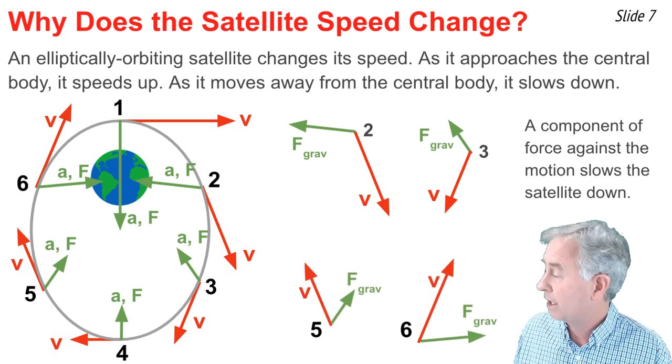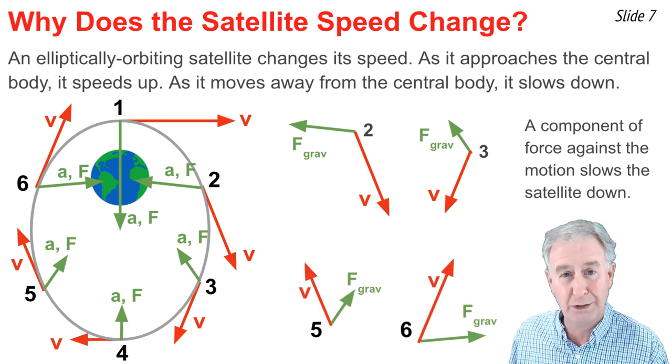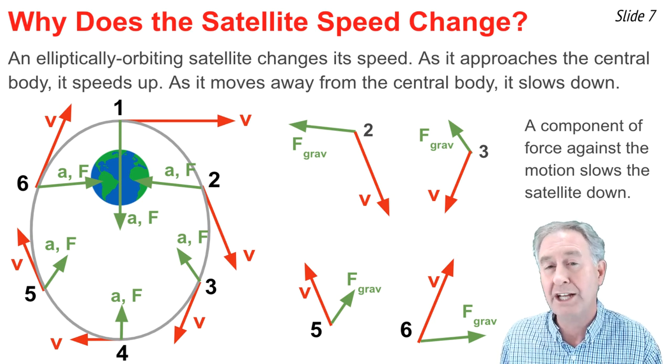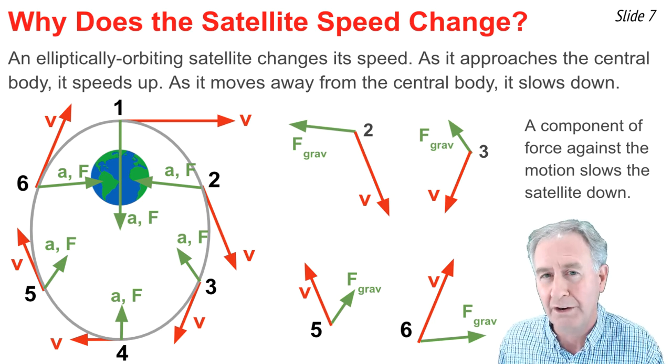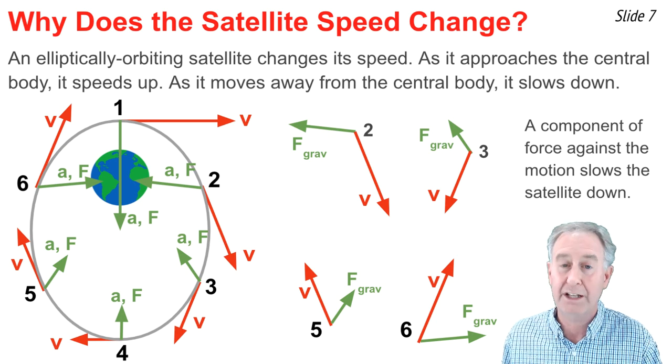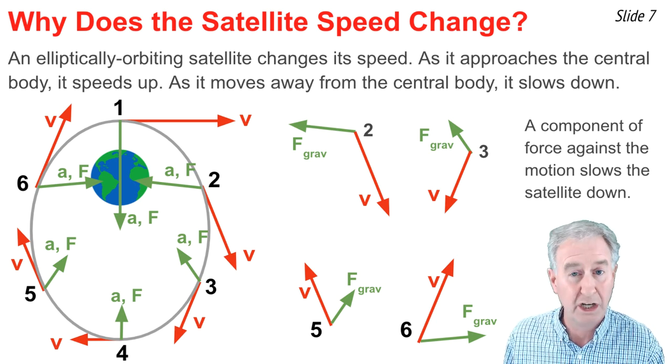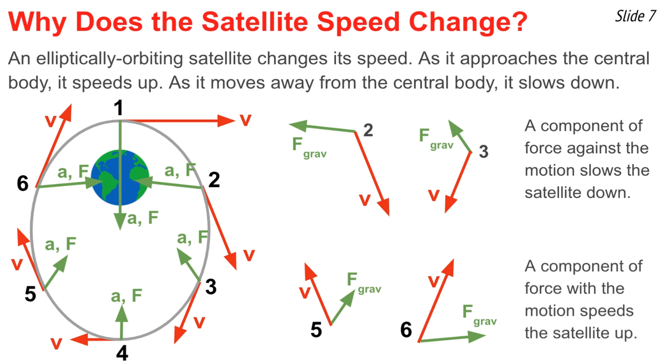And while the satellite moves from location 4 to location 1, it's speeding up. It's actually moving back towards the Earth. And the force of gravity is also in that same direction, tugging it in the direction that it's traveling. And whenever there's a component of force in the direction of motion, it causes the satellite to speed up.